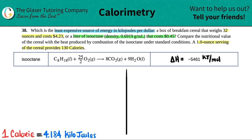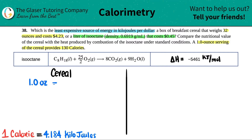Let's work with the breakfast cereal first. The cereal weighs 32 ounces and costs four dollars and 23 cents. They told us that a one-ounce serving provides 130 calories. Note that capital-C Calories are kilocalories — that's the same as the nutritional information on the back of food packaging, always in capital-C kilocalories.